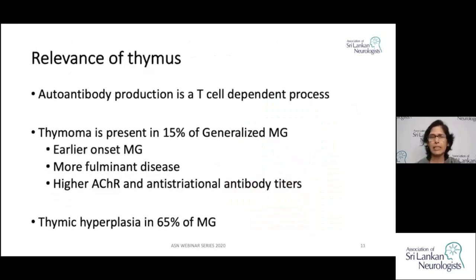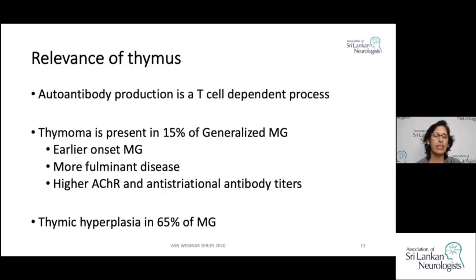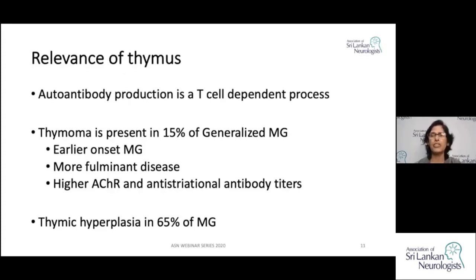The thymus influences antibody production in myasthenia gravis through a T-cell dependent process. Young myasthenics are more likely to have thymoma — about 15% of generalized myasthenia gravis patients have thymoma, and they tend to have more severe disease with higher acetylcholine receptor and anti-striational antibody titers. Another 65% of patients have thymic hyperplasia, demonstrating the thymus's relevance in the pathogenesis.